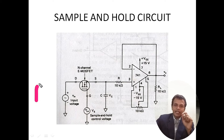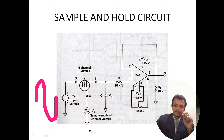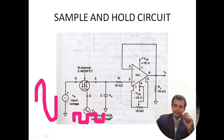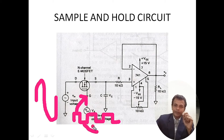The input signal is a continuous signal — a sinusoidal signal, either a sine wave or cosine wave. The control voltage, or control signal, is a pulse signal in the form of a square waveform. This is the time period for which the pulse is ON, and this is the time period for which the pulse is OFF.